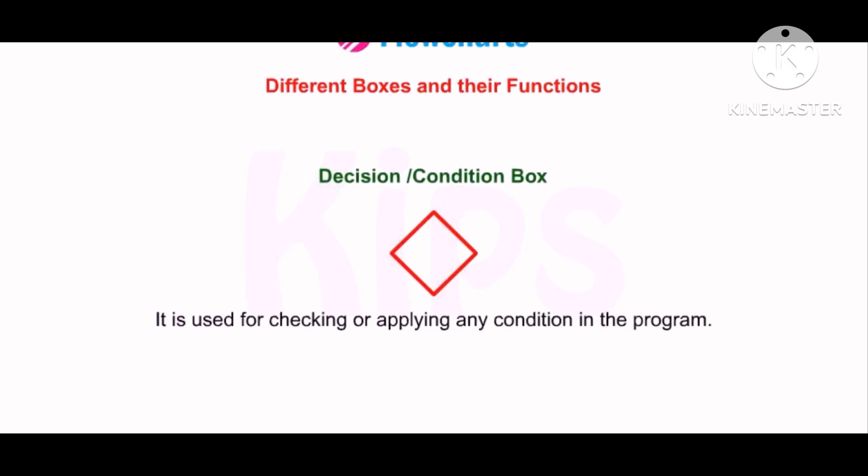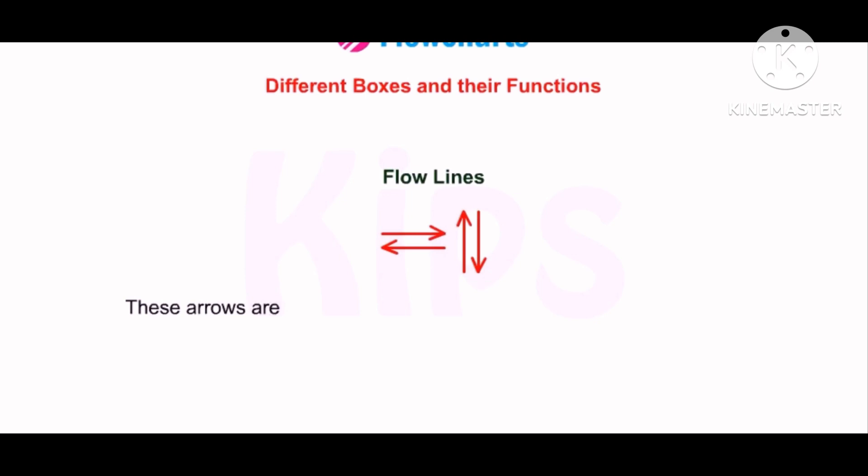Let us now explain the different boxes and their function in flowchart. Start or stop box: It is used in the beginning and at the end of the flowchart. Input or output box: It is used for accepting inputs or giving output of the program. Processing box: It is used for writing the processing instructions and doing calculations. Decision and condition box: It is used for checking or applying any condition in the program. Flowlines: These arrows are used to connect the various geometrical symbols in a flowchart. Flowlines show the direction in which the program is moving. Connectors: These are used to connect one part of flowchart to another.